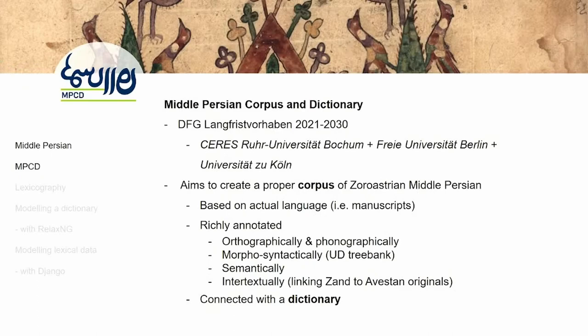This is where our project comes in: the Middle Persian Corpus and Dictionary project. We have received funding from the Deutsche Forschungsgemeinschaft, involving three universities: Bochum, Berlin, and the Köln University. We aim to do two things. First, we have to create a proper corpus of Zoroastrian Middle Persian based on the actual manuscripts and richly annotated — creating a treebank with additional layers of information, linking Zand texts and non-Zand texts to Avestan originals. Our second goal is to create a dictionary, which is mostly what I will be talking about here.